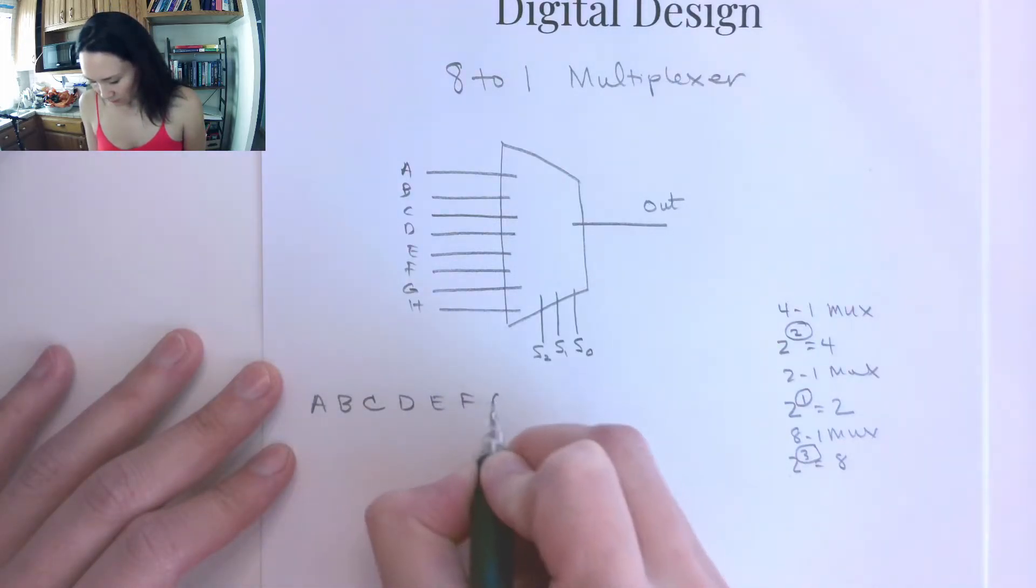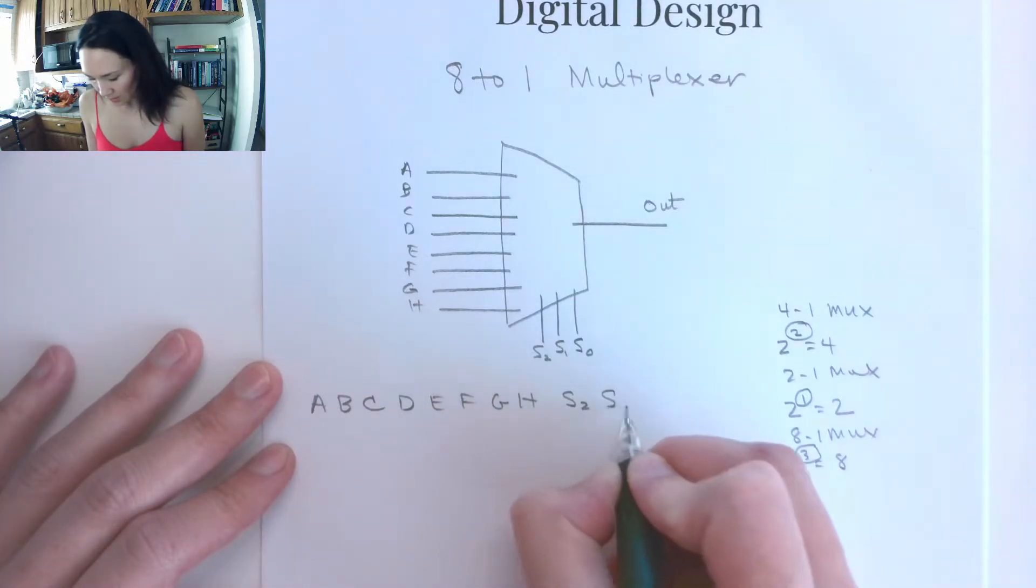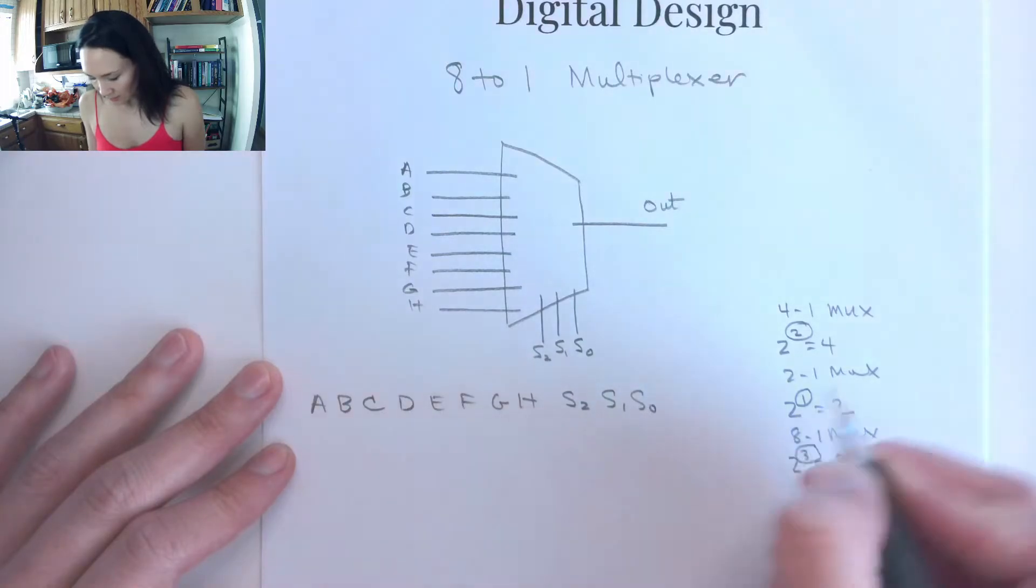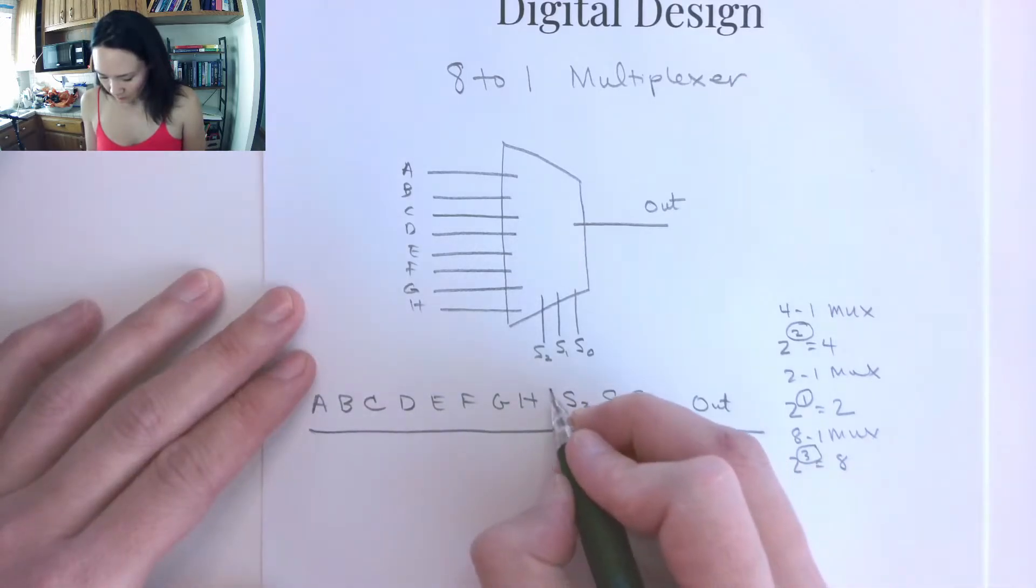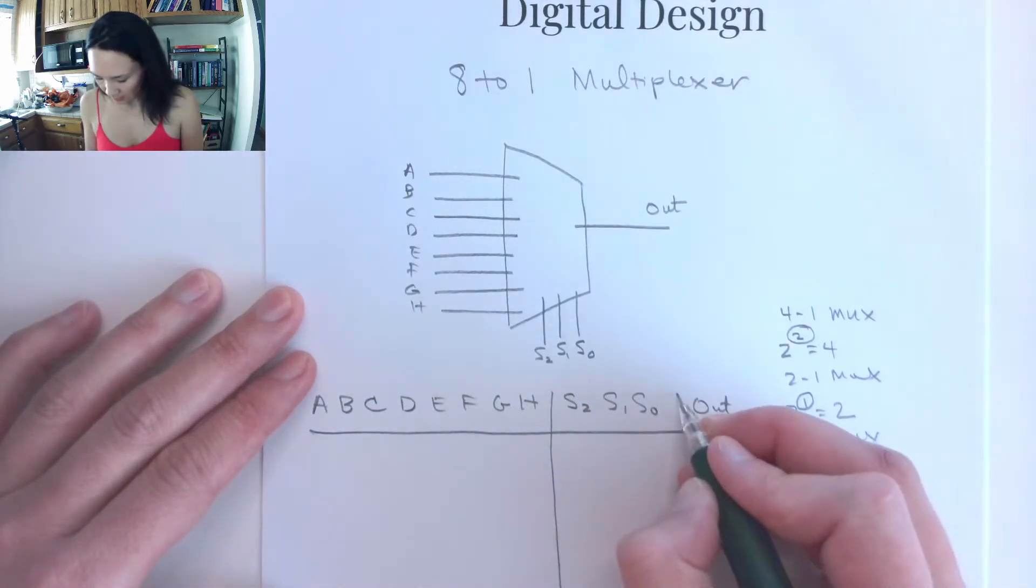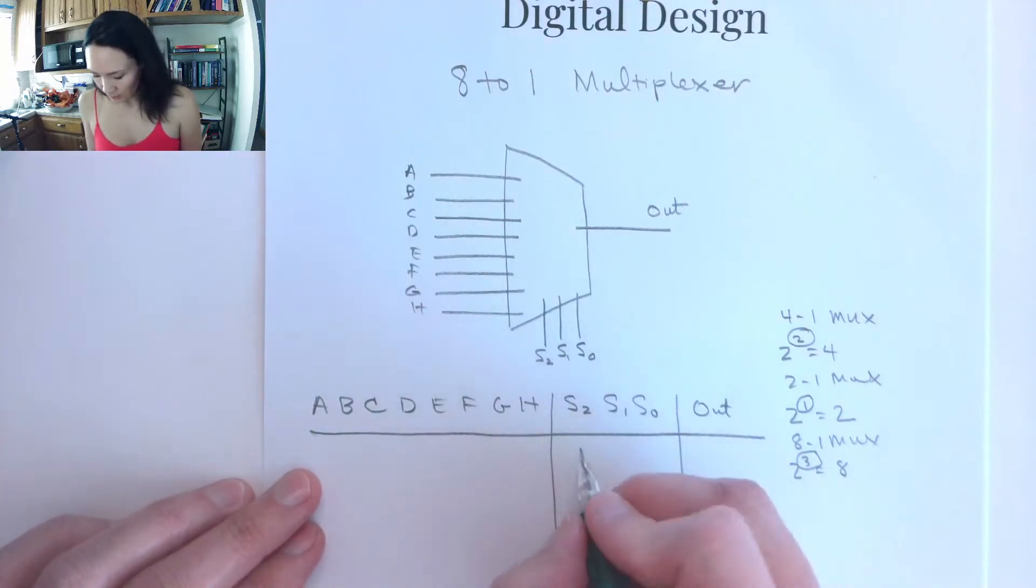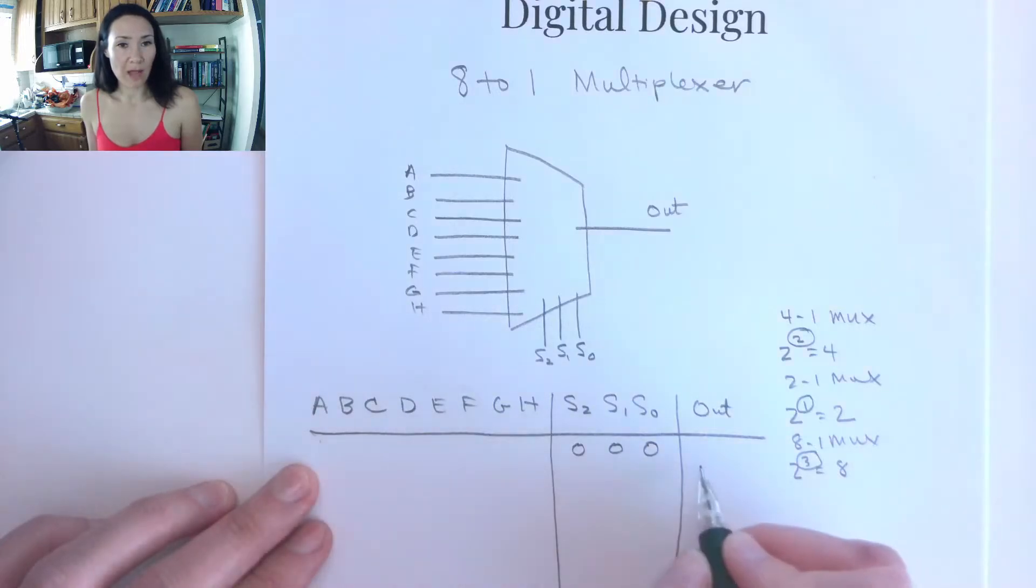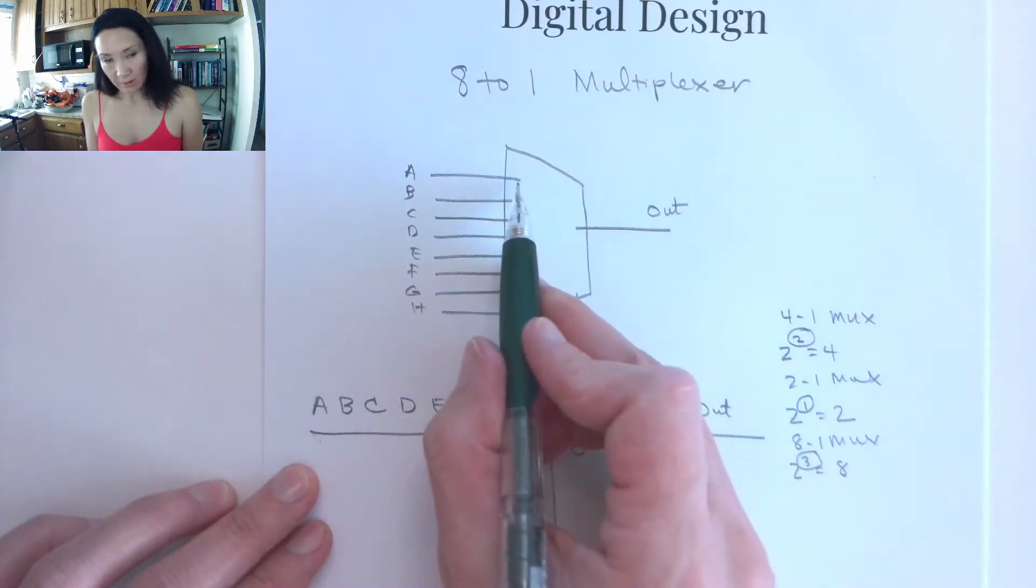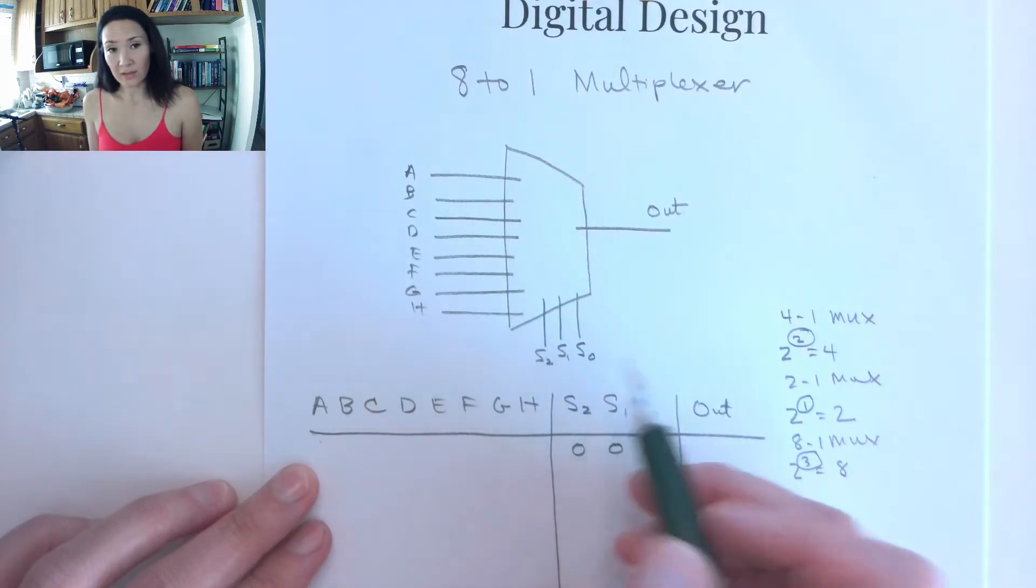A, B, C, D, E, F, G, H are my data inputs. My select inputs are S2, S1, S0, and here's my output. So if I kind of separate these columns, the first case is I want to start with 0, and for 0, I want to take whatever is coming in on A and pipe it to the output. So I'm going to grab this A line, and I'm going to route it to the output if I have 0s coming in on all these select lines.